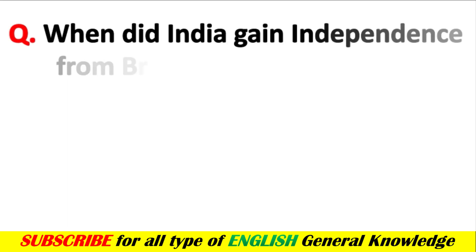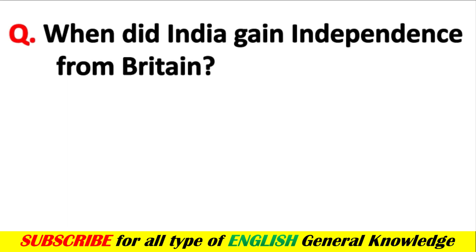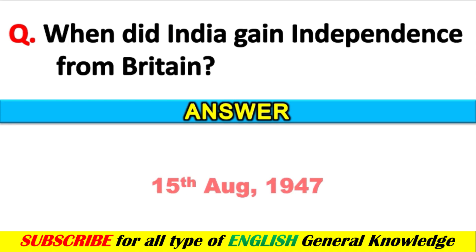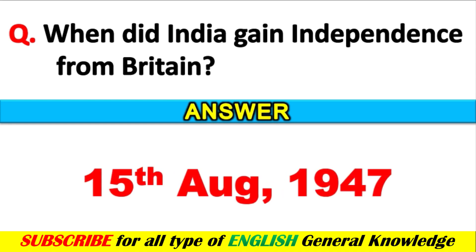When did India gain independence from Britain? Answer: On 15th August 1947.